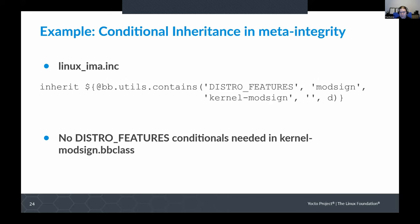Another technique is conditional inheritance. Inherit is when you're trying to pull in a bbclass file, and again you can do things conditionally. In the meta-integrity layer, which is a subset of meta-security, there's a kernel-modsign bbclass that is conditionally inherited based on a modsign distro feature. That's quite a useful trick to use as well.